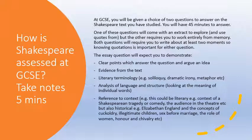Now, when you get to your GCSE you'll be given a choice of two questions to answer on the Shakespeare text you've studied. You'll have 45 minutes to answer one. One of these questions will come with an extract to explore and use quotes from, but the other requires you to work entirely from memory. Both questions will require you to write about at least two moments, so knowing quotations is important. The essay will expect you to demonstrate clear points answering the question, evidence from the text, literary terminology — e.g. soliloquy, dramatic irony, metaphor — analysis of language and structure, and reference to context, both literary and historical, such as Elizabethan England, cuckoldry, illegitimate children, sex before marriage, the role of women, honour and chivalry.